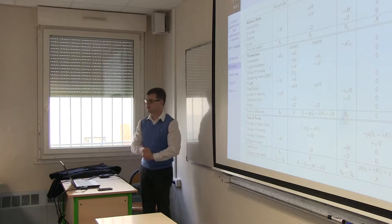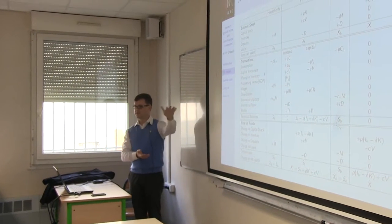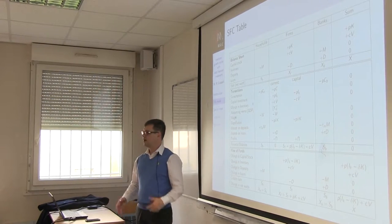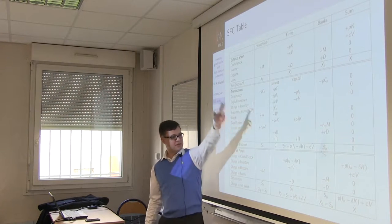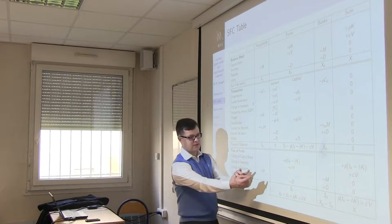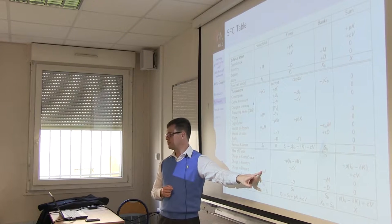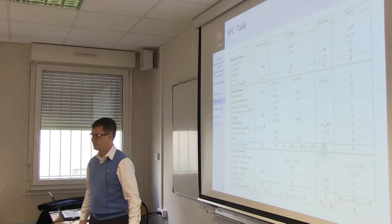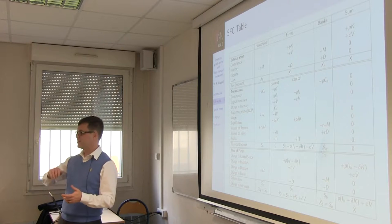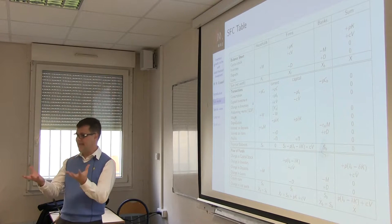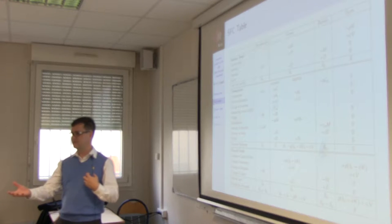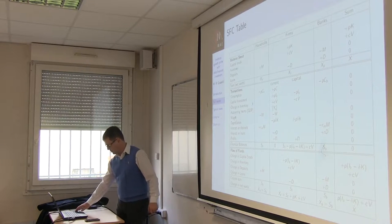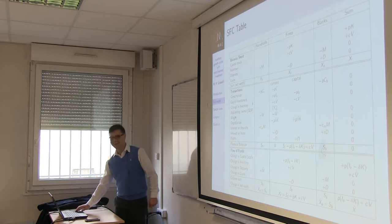That's the stock-flow consistent table for the model — every row sums to zero and every column sums to a financial balance redistributed into what each sector can invest in. The household sector only invests in deposits; the firm sector only invests in loans. I'm assuming the interest rate on loans and deposits is the same, so I can use net positions. That satisfies the stock-flow consistency constraint.